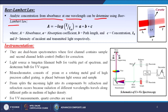The Beer-Lambert law: A = -log(I/I₀) = a·b·c, where capital A is the absorbance, small a is the absorption coefficient, b is the path length, c is the concentration, and I₀ and I are the intensity of incident and transmitted light respectively. From this image you can easily understand about the Beer-Lambert law.